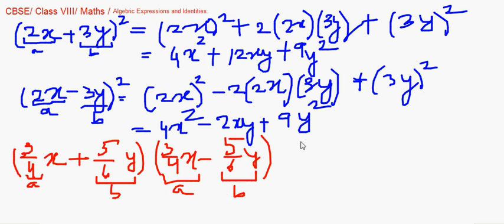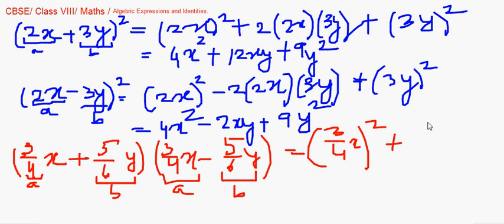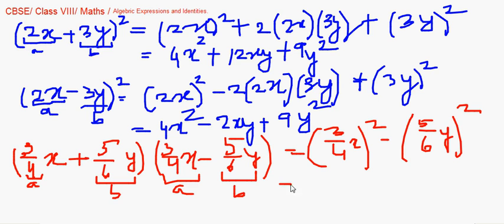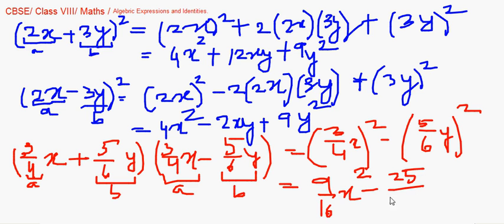That is the expansion of a squared minus b squared. So a squared is (3/4 x) squared minus (5/6 y) squared. We get 9/16 x squared minus 25/36 y squared. That is obtained by multiplying 3/4 x by 3/4 x, and 5/6 y by 5/6 y. Hope you followed this — we move on to taking up more questions next.